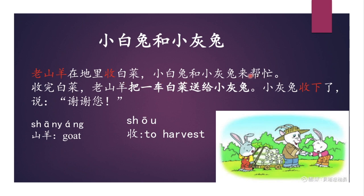小白兔和小灰兔來幫忙。 幫忙 means to help. The little white rabbit and the little gray rabbit came to help. 收完白菜 — 完 indicates it is finished. 收完白菜 means when they were done with harvesting.